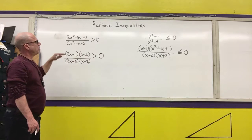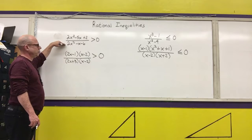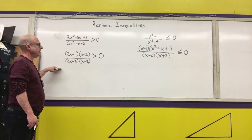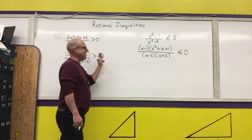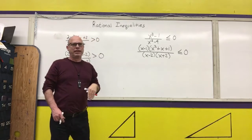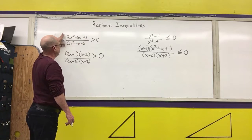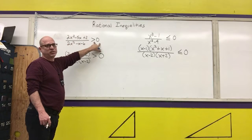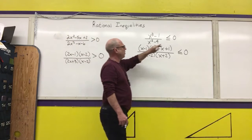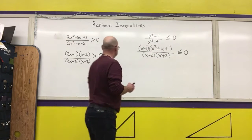The way you solve a rational inequality — first step, as with graphs of rational functions, is to factor it. Then we're going to analyze these factored forms using a number line to answer the question of when the left-hand side is positive, and when the left-hand side is negative or equal to zero.